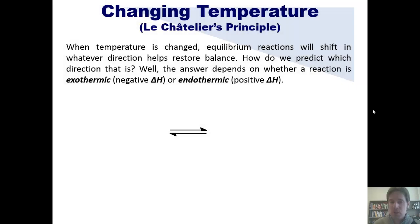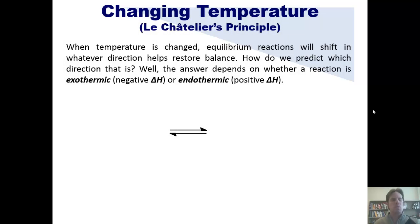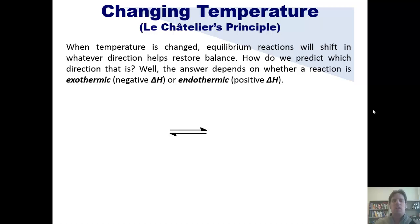How does changing temperature affect equilibrium? When temperature is changed, equilibrium reactions shift in whichever direction helps to restore balance. So how do we predict which direction that is? The answer depends on whether a reaction is exothermic or endothermic.